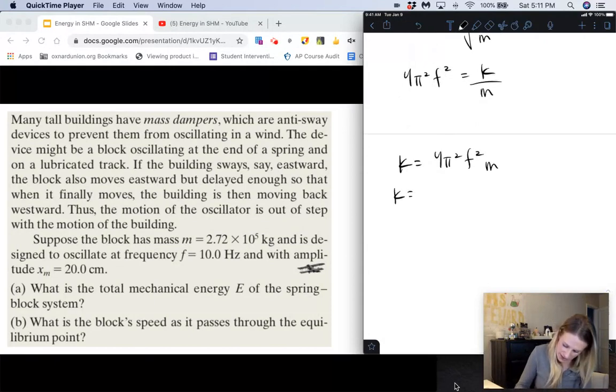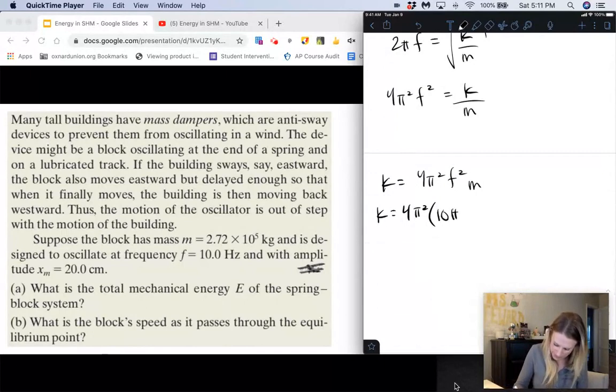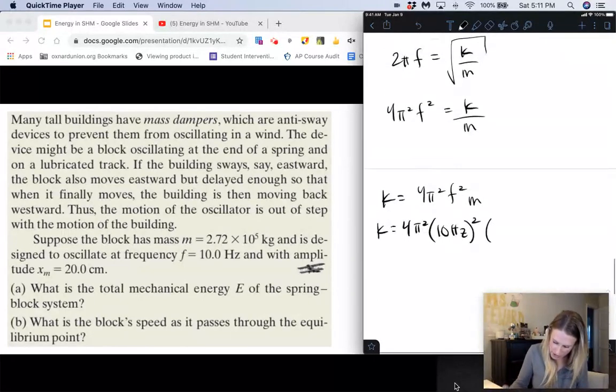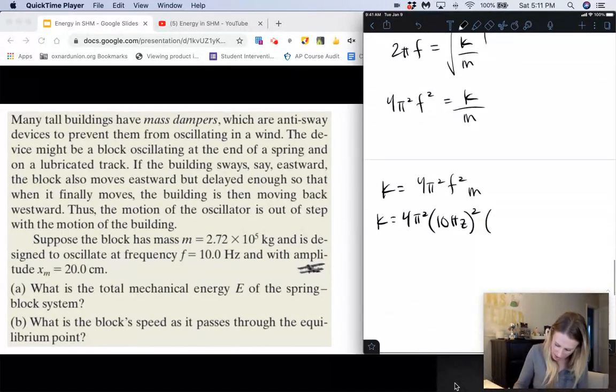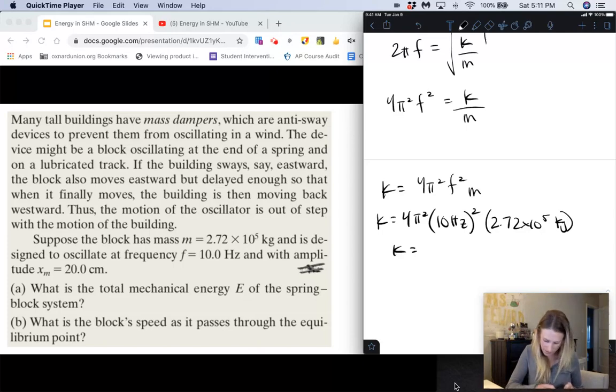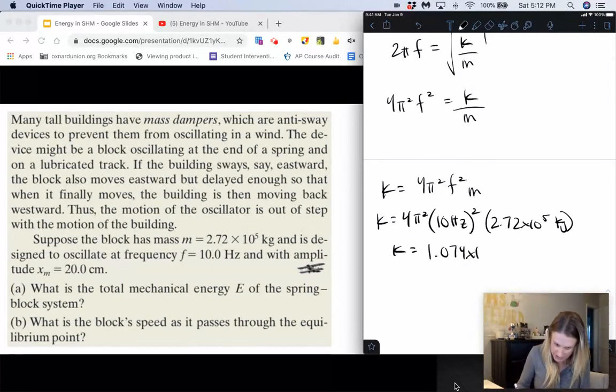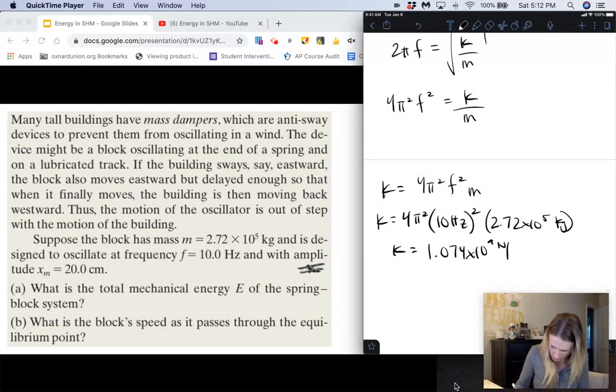So plugging in our numbers here, our spring constant k is equal to 4 times π² times frequency squared, which is 10², which is 100, times 2.72 times 10 to the 5th. And so we end up getting about 1.074 times 10 to the 9th newtons per meter.